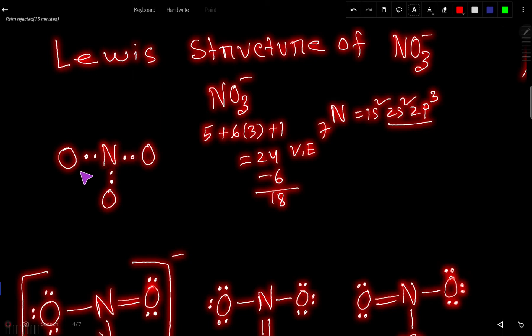So we need to satisfy the octet for outer atoms first. So this oxygen will take more six, this oxygen will take more six, and this oxygen will take more six. So six, six, six - 18. So we have used all the valence electrons.